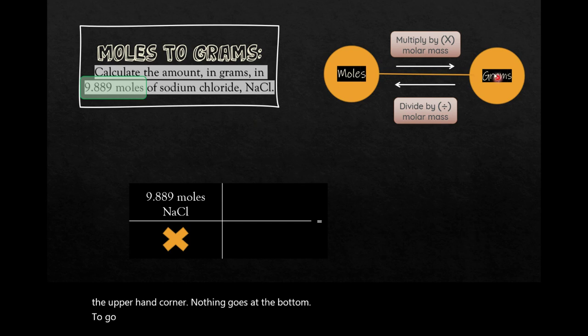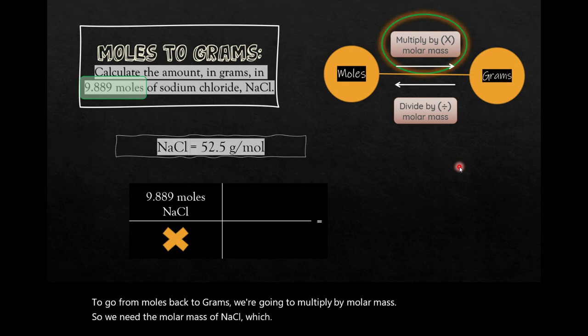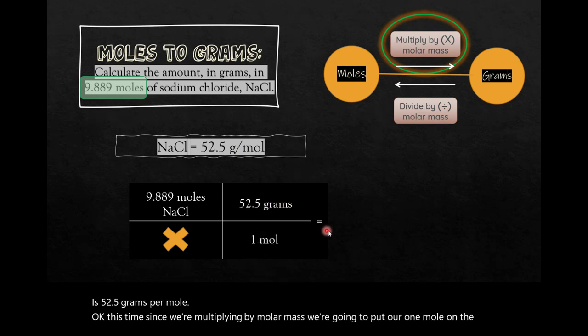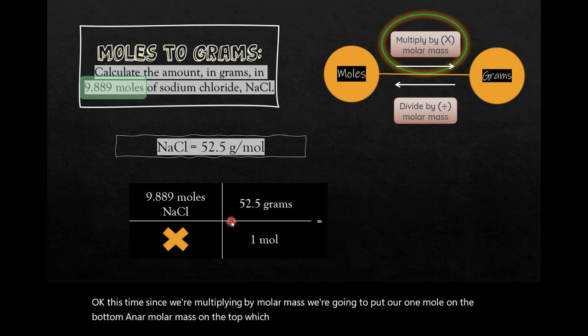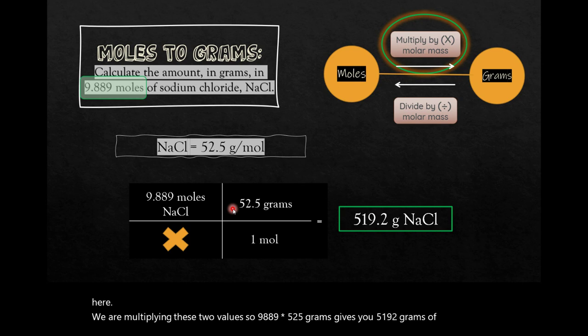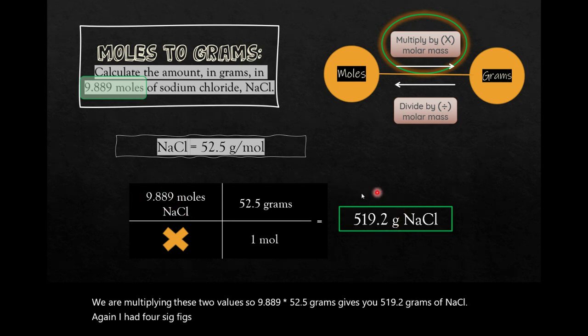To go from moles back to grams, we're going to multiply by molar mass. So we need the molar mass of NaCl, which is 52.5 grams per mole. Okay, this time, since we're multiplying by molar mass, we're going to put our one mole on the bottom and our molar mass on the top, which is 52.5 grams per one mole. So it also makes sense here. We are multiplying these two values. So 9.889 multiplied by 52.5 grams gives you 519.2 grams of NaCl. Again, I had four sig figs originally, so I kept four in my final answer.